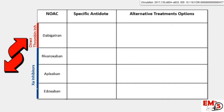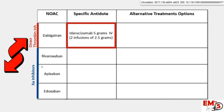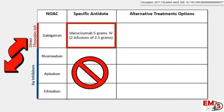We have the direct thrombin inhibitors and the factor Xa inhibitors. I'll give you the good news first. With dabigatran, we have an antidote — it's idarucizumab. It's a monoclonal antibody, and dabigatran actually binds idarucizumab much better than it binds to thrombin. But the bad news is, for the factor Xa inhibitors, we really don't have an antidote at this point.